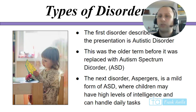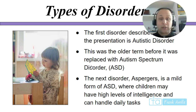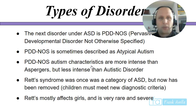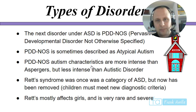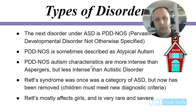The first disorder is autistic disorder, which was the older term before it was replaced with autism spectrum disorder. Next is Asperger's, a mild form of ASD where children may have high levels of intelligence and can handle daily tasks. PDD-NOS — Pervasive Developmental Disorder Not Otherwise Specified — is sometimes described as atypical autism. Its characteristics are more intense than Asperger's but less intense than autistic disorder.